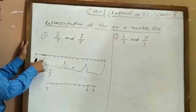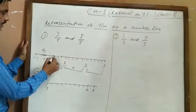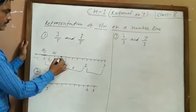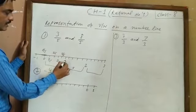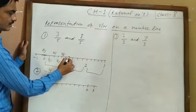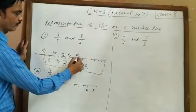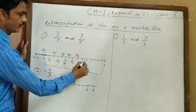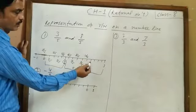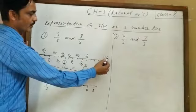We can write 0 as 0 upon 5. Then the points follow: 1 upon 5, 2 upon 5, 3 upon 5, 4 upon 5, and here it is 5 upon 5 which equals 1. Continuing: 6 upon 5, 7 upon 5, 8 upon 5, 9 upon 5, 10 upon 5 which equals 2. Similarly we proceed: 11 upon 5, 12 upon 5, 13 upon 5, 14 upon 5.